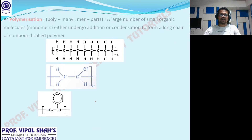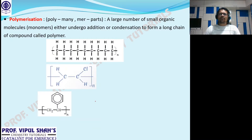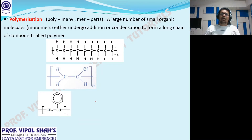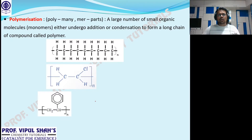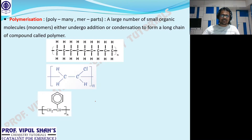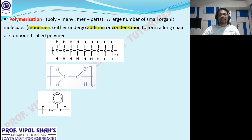Then, a very important point: polymerization. In chemistry, the words often contain the answer. 'Poly' means many, 'mer' means parts — a compound made up of many parts. A single molecule is called a monomer ('mono' means one). Many monomers, when they either undergo addition or condensation to form a long chain compound, the product is called a polymer and the process is called polymerization.